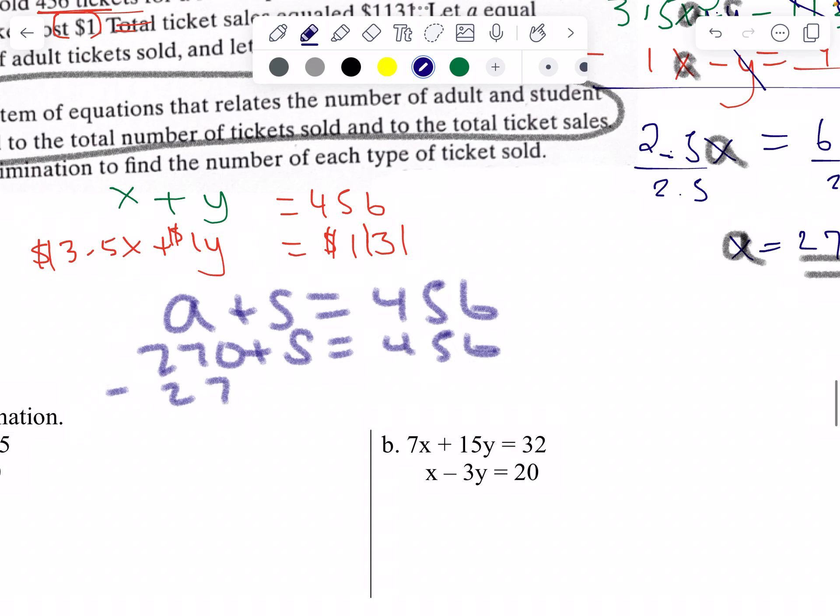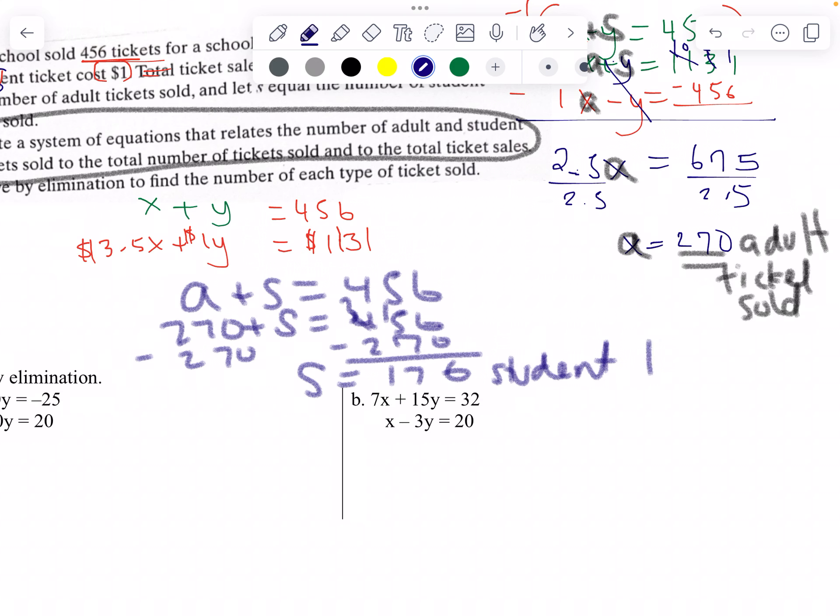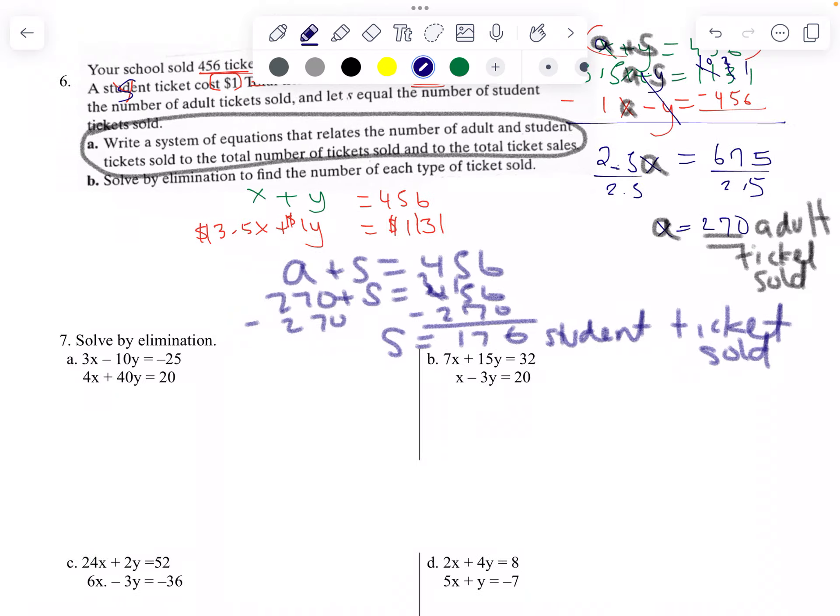Subtract 270. Oh wait, I don't need to borrow there. Where's the rewind? I just get a six here. I need to borrow here. 186 student tickets sold.